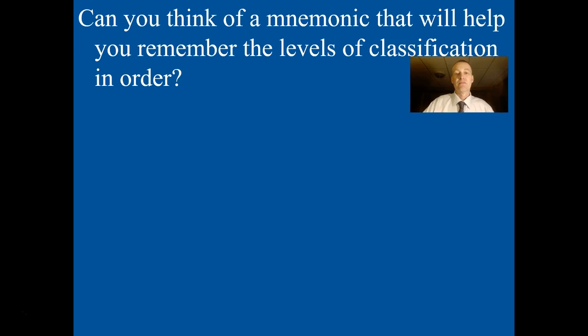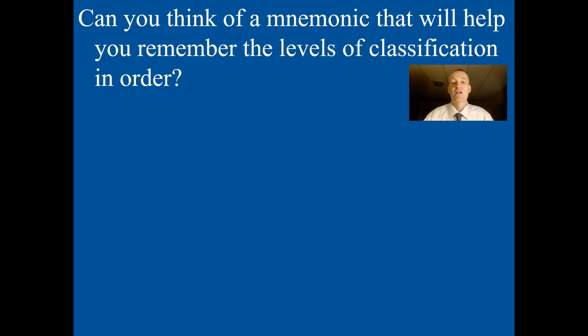I want you to think for a minute of a mnemonic — a little learning device that you can use to help you remember the levels of classification in order. Perhaps you're familiar with Roy G. Biv, the mnemonic for the colors of the rainbow. The weirder and stranger a mnemonic is, the better it will oftentimes work. Think of a sentence, something that rhymes, something that's crazy, to help you remember the levels from the highest level, kingdom, all the way to the lowest level, species. You can stop the video and jot down a couple of ideas, and after that I'll share a few that I've created or seen students use.